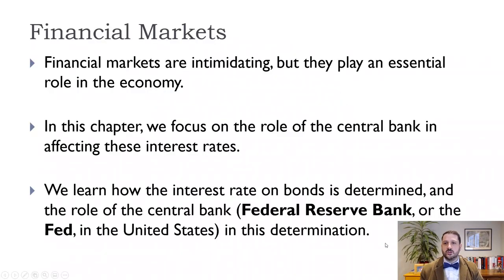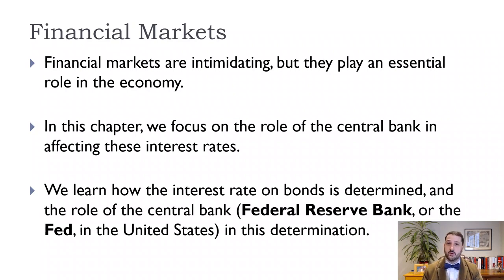The most important thing to keep in mind is that in this model the interest rate acts as a price to bring money supply and money demand into equilibrium. At the same time, the Federal Reserve — the central bank of the United States — is really what sets that interest rate, choosing the point along the money demand curve where they want to be. Financial markets can seem complex with stock markets, bond markets, commodity markets, and derivatives, but we're going to focus on a very simple part: money demand, money supply, and the role of the central bank.